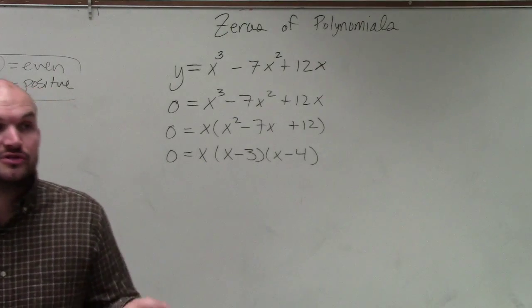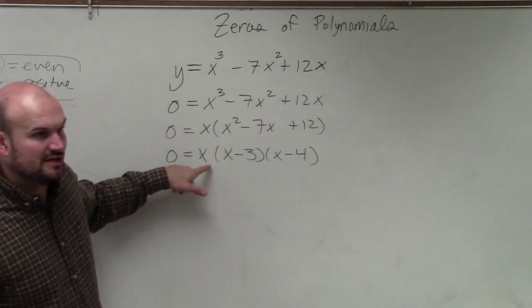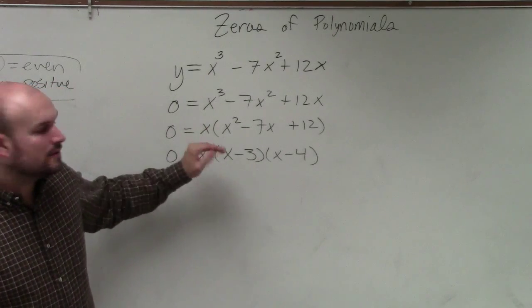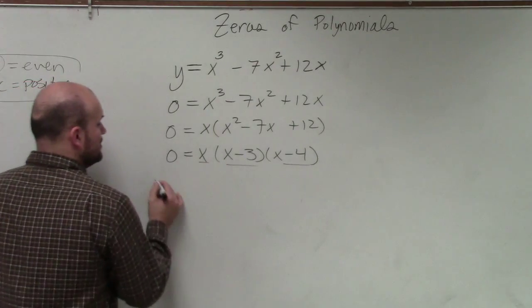So now, I'm just using the zero product property. What, Kelsey? What? The only thing different is I factor out this x. So now, all I'm simply going to do is just use the zero product property with all three of my factors.